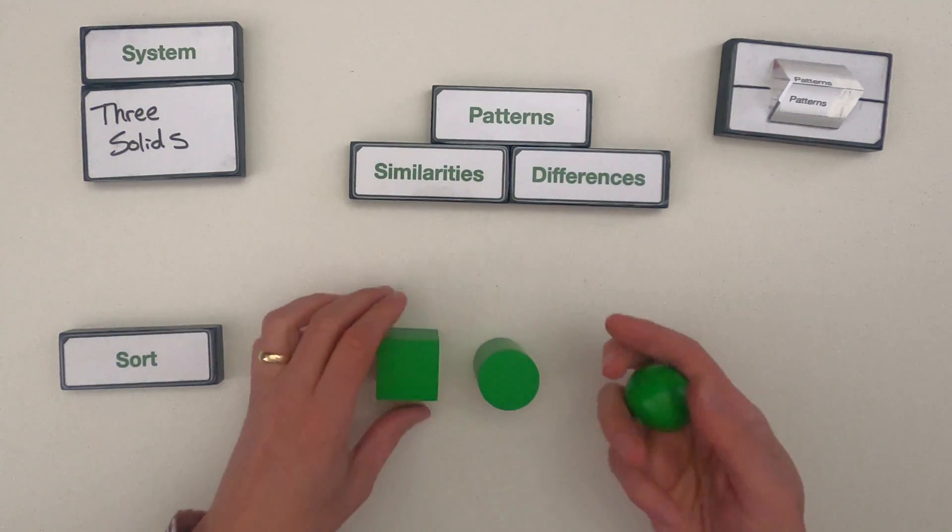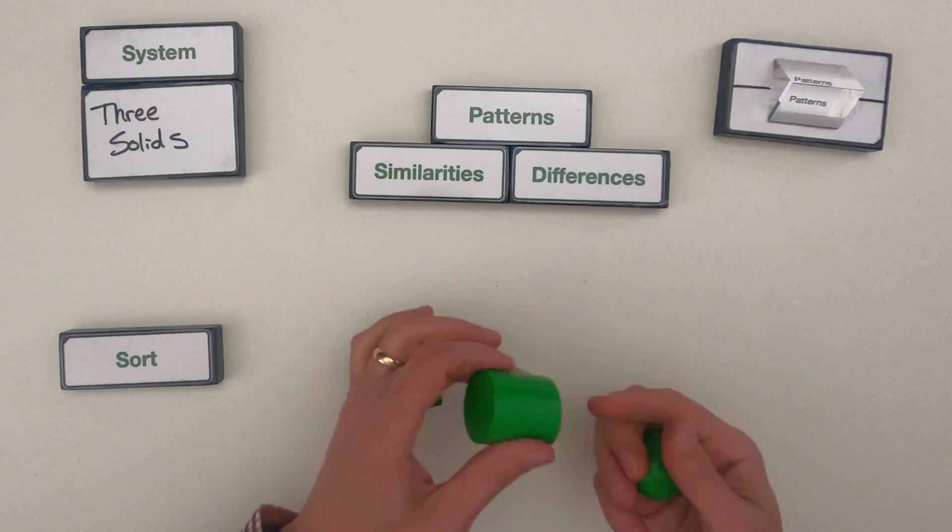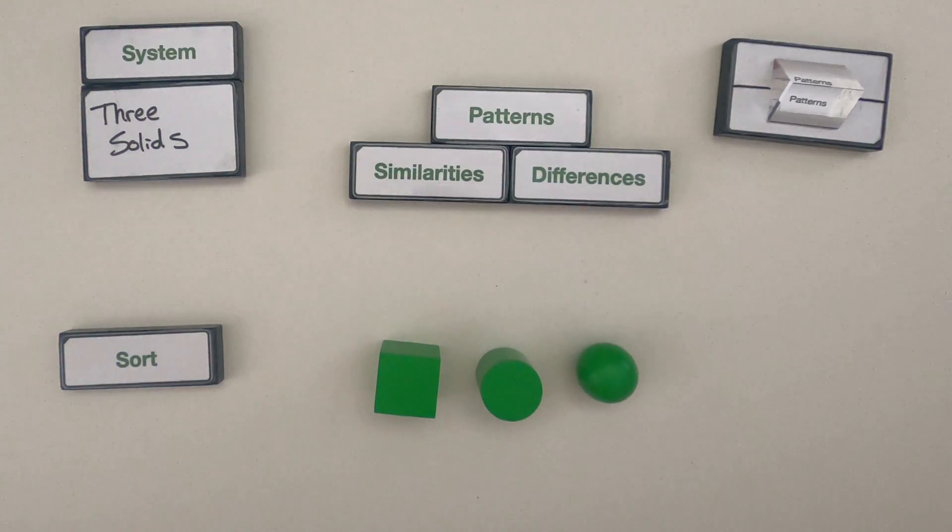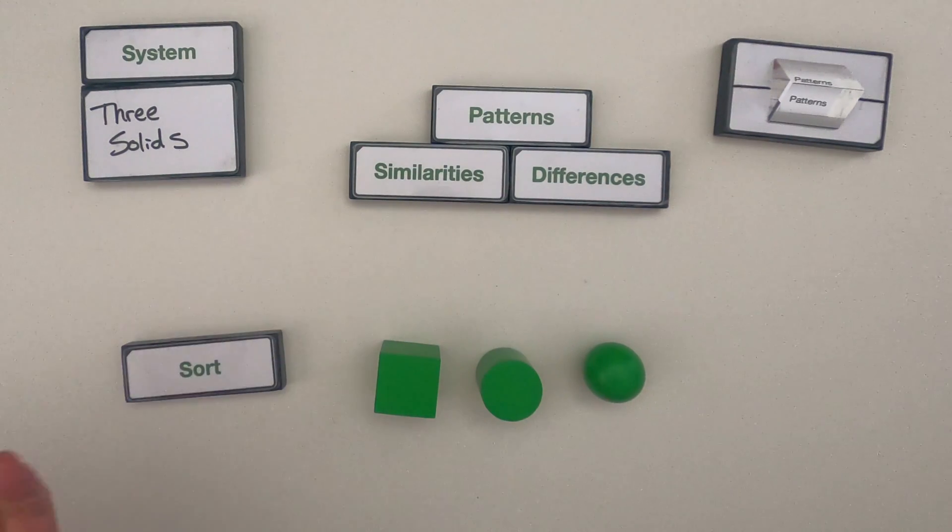So the first thing I would do is try to figure out, they're all made of wood, they're all green, so I would just start writing down what are some similarities that we could use to sort these.